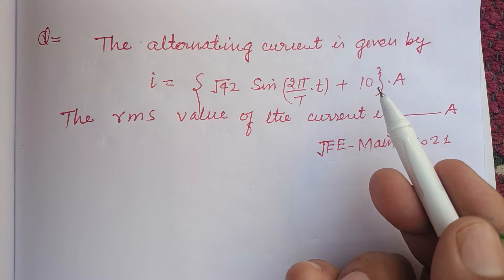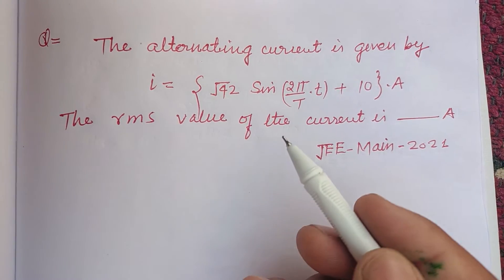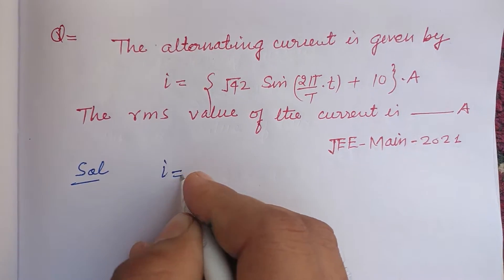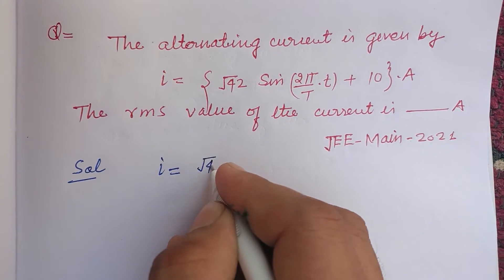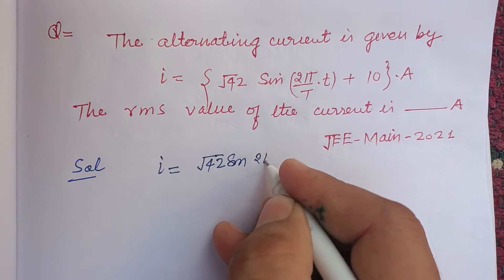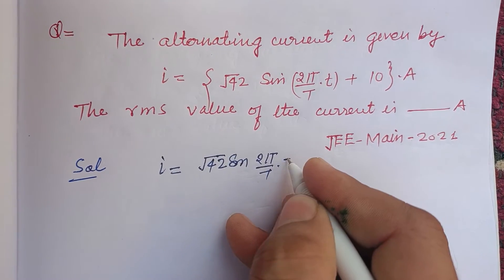...t/T·t plus 10 ampere. The RMS value of the current is to be found. So students, here the equation of the alternating current is given in this way: √42 sin(2π/T × t) plus 10 ampere.